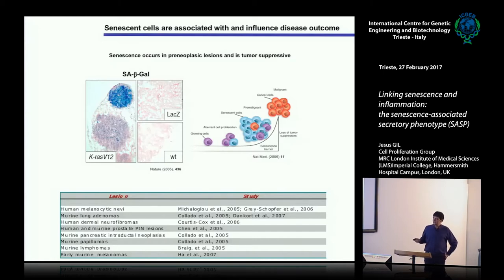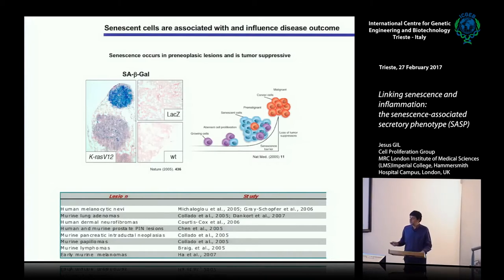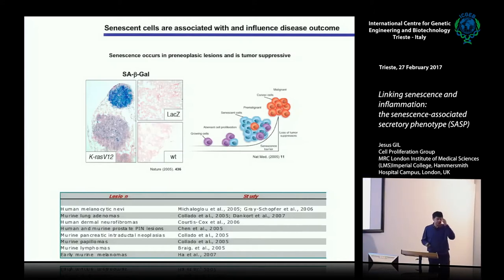For example, in a transgenic lung expressing K-RAS, a preneoplastic lesion that is benign is enriched in senescent cells, while a more malignant adenocarcinoma is devoid of them. The model is that during cancer progression, as cells become more and more malignant, senescence is activated in the premalignant state and precludes or slows progression to a more malignant state. To progress, you need to bypass or cancel the senescent response. A lot of interest in senescence came from this wave of papers establishing senescence as a tumor suppressing mechanism.